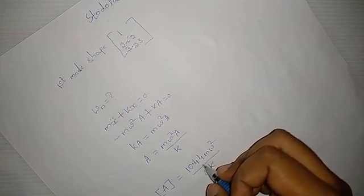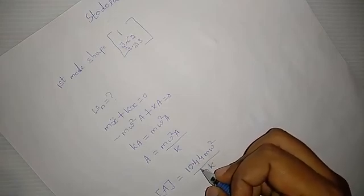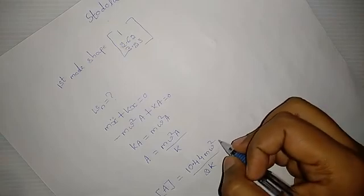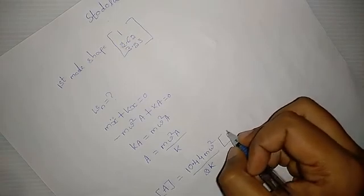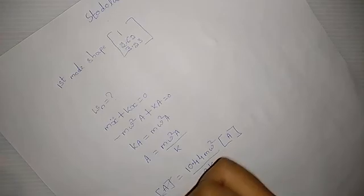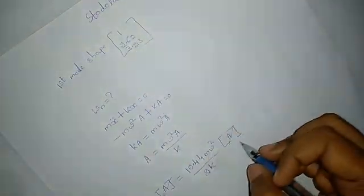So it is 10.44 m omega squared by 2k multiplied by this amplitude vector. This and this get cancelled. This is nothing but 1, 2.62, and 3.23.